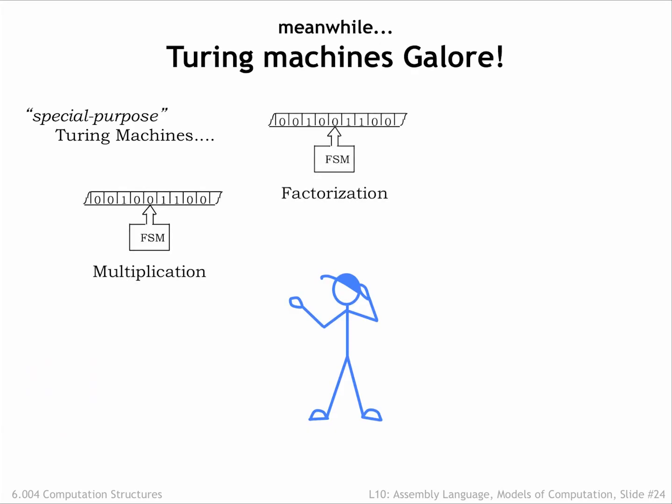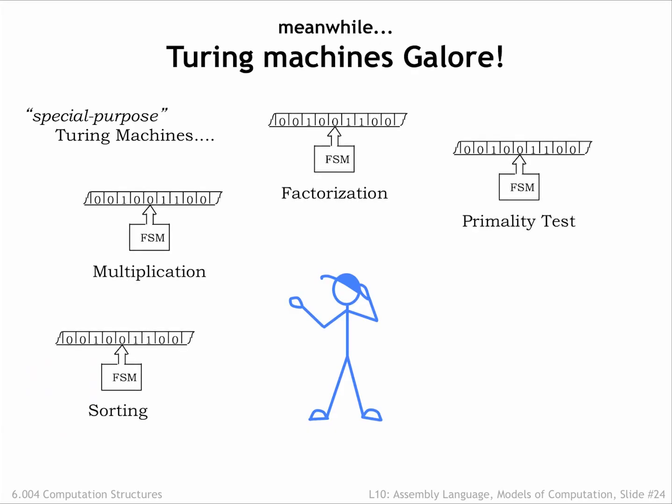We've decided that Turing machines can model any realizable computation. In other words, for every computation we want to perform, there's a different Turing machine that will do the job. But how does this help us design a general-purpose computer? Or are there some computations that will require a special-purpose machine no matter what?